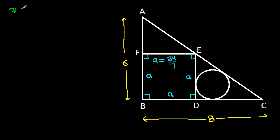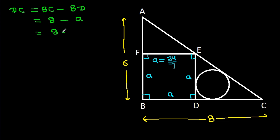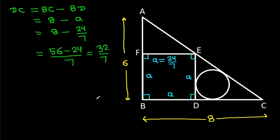Now, DC will be equal to BC minus BD. BC is 8 minus BD, and BD is A. So it is 8 minus A, which is 24 by 7. That is 56 minus 24 by 7, which will be equal to 32 by 7. So DC is 32 by 7.